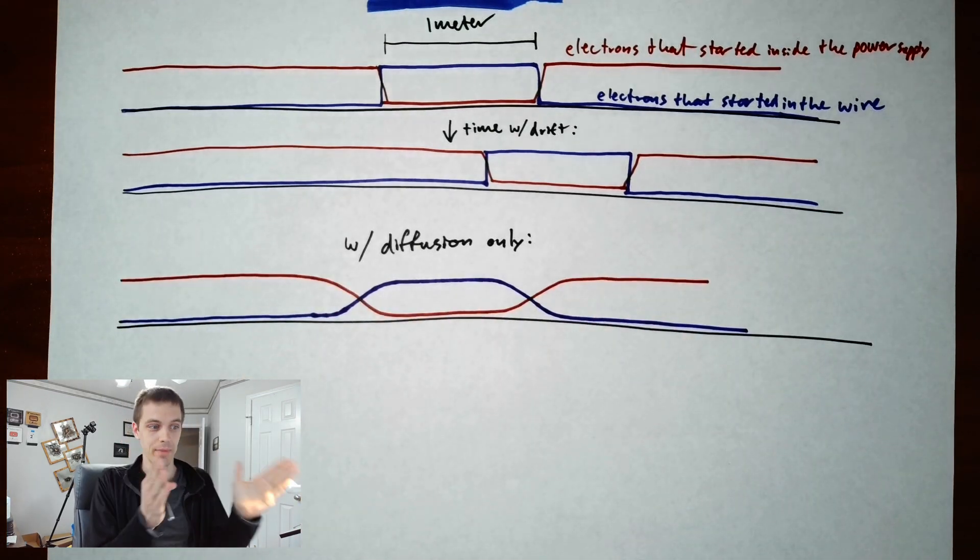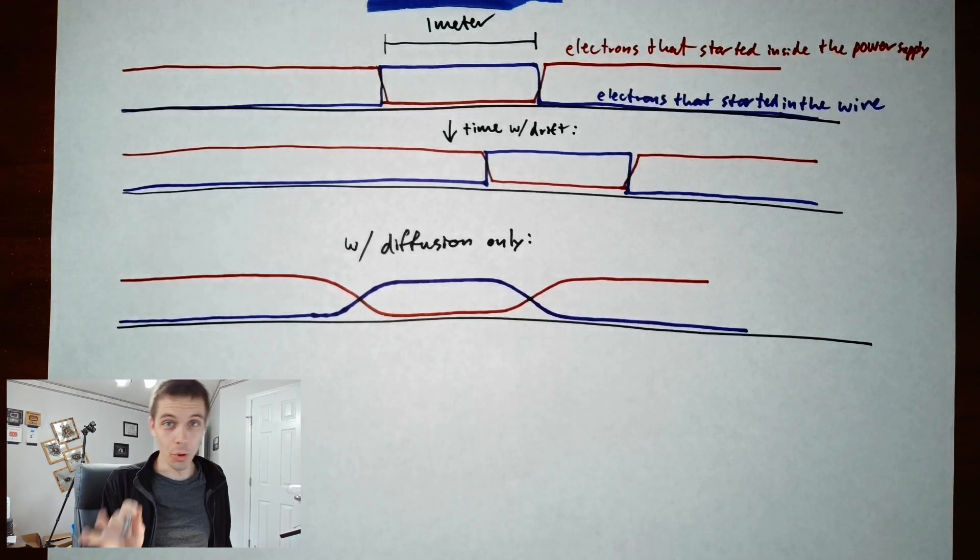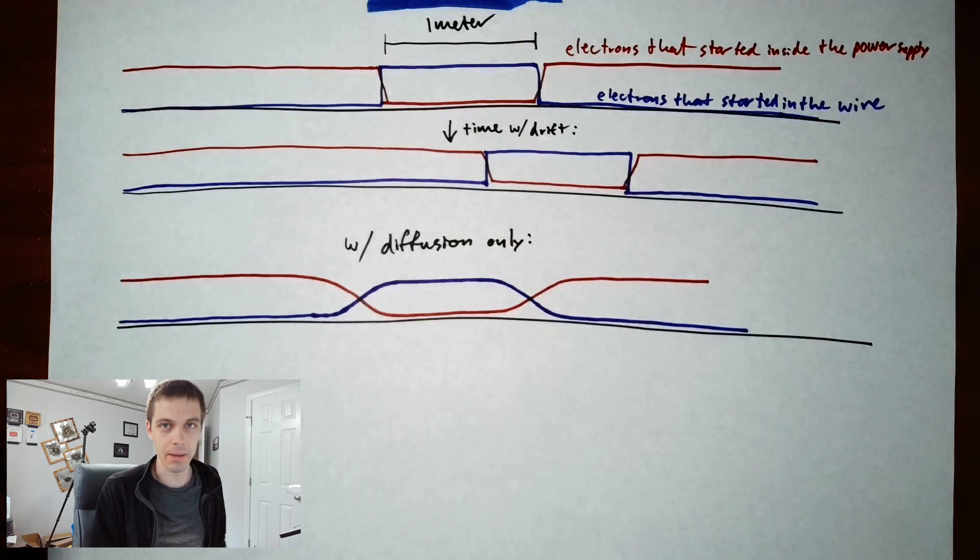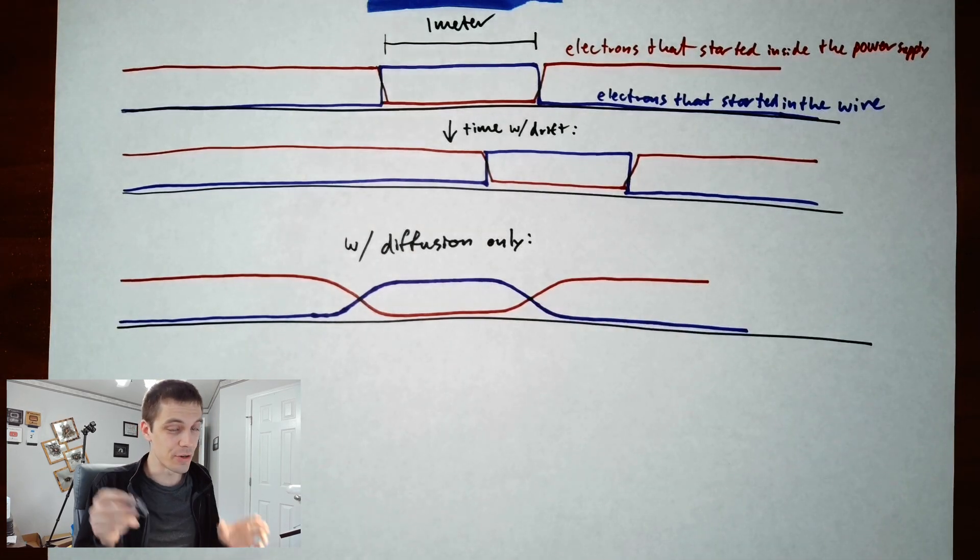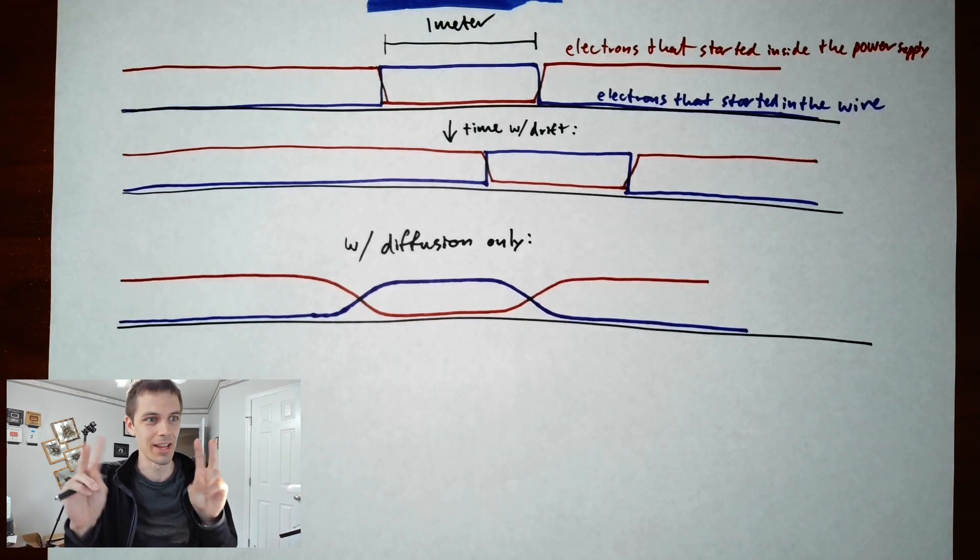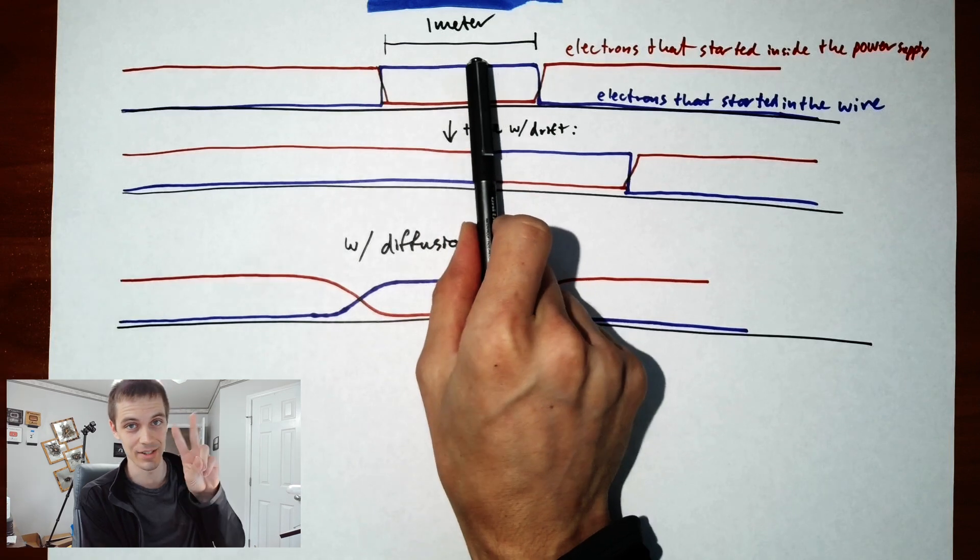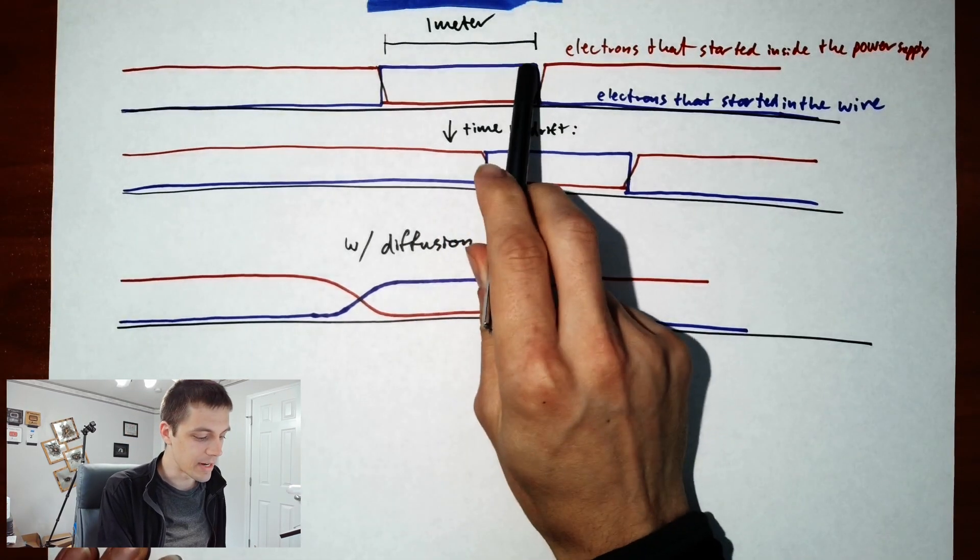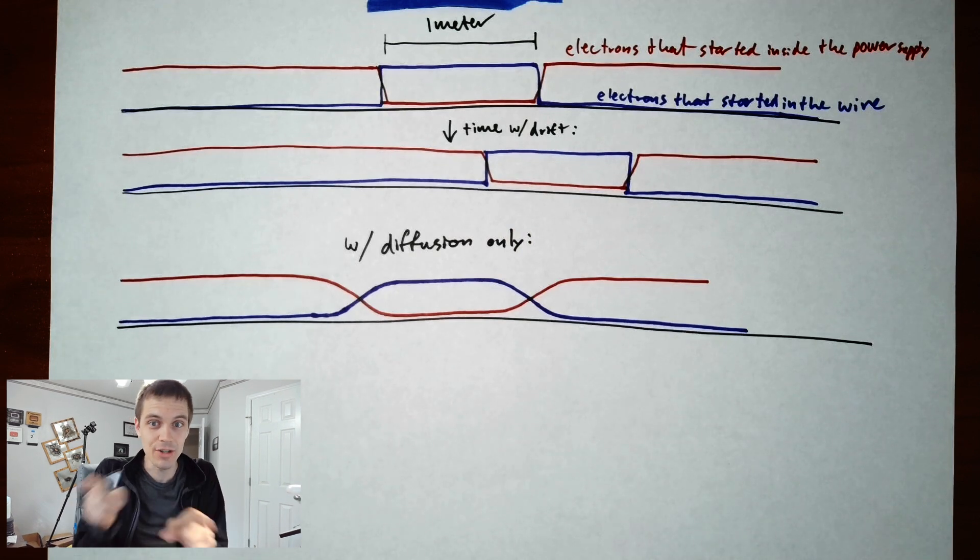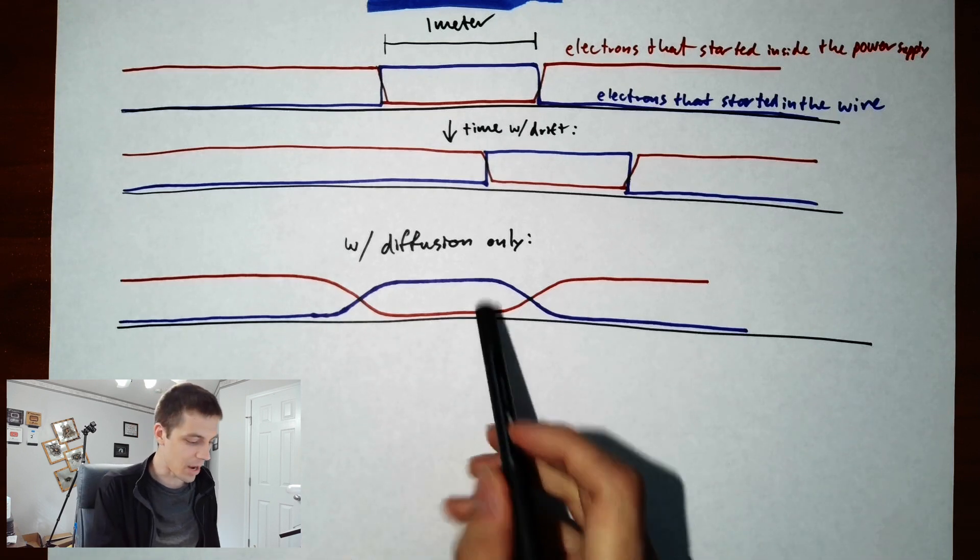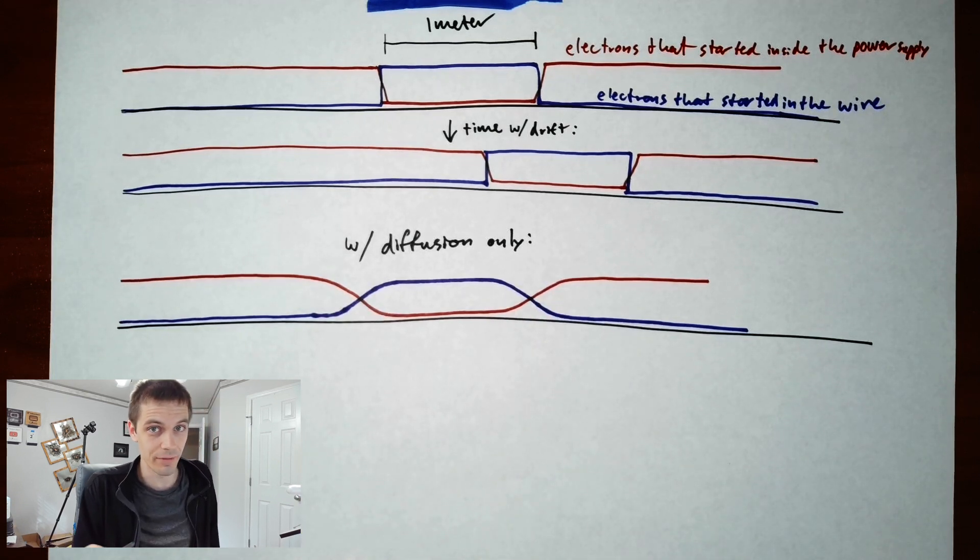There are two things electrons do inside a wire. They drift when all electrons move at once, and they diffuse, where adjacent electrons flip places. If you only have drift, we'd expect this distribution to just shift over with time. If you didn't have any current flowing and just let electrons sit there, they would slowly exchange. If you take an electron from right here and exchange it with one from here, nothing really happens because they're both electrons inside the wire. But if you exchange an electron from right here with one from the very edge where the wire meets the power supply, you've blurred that line.